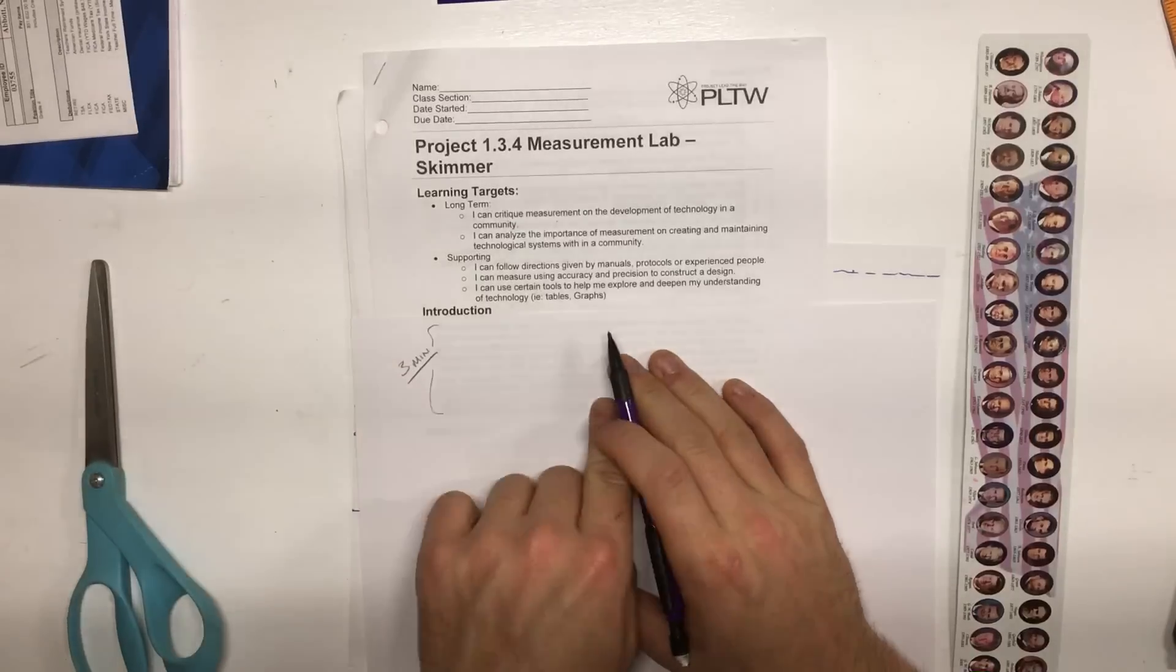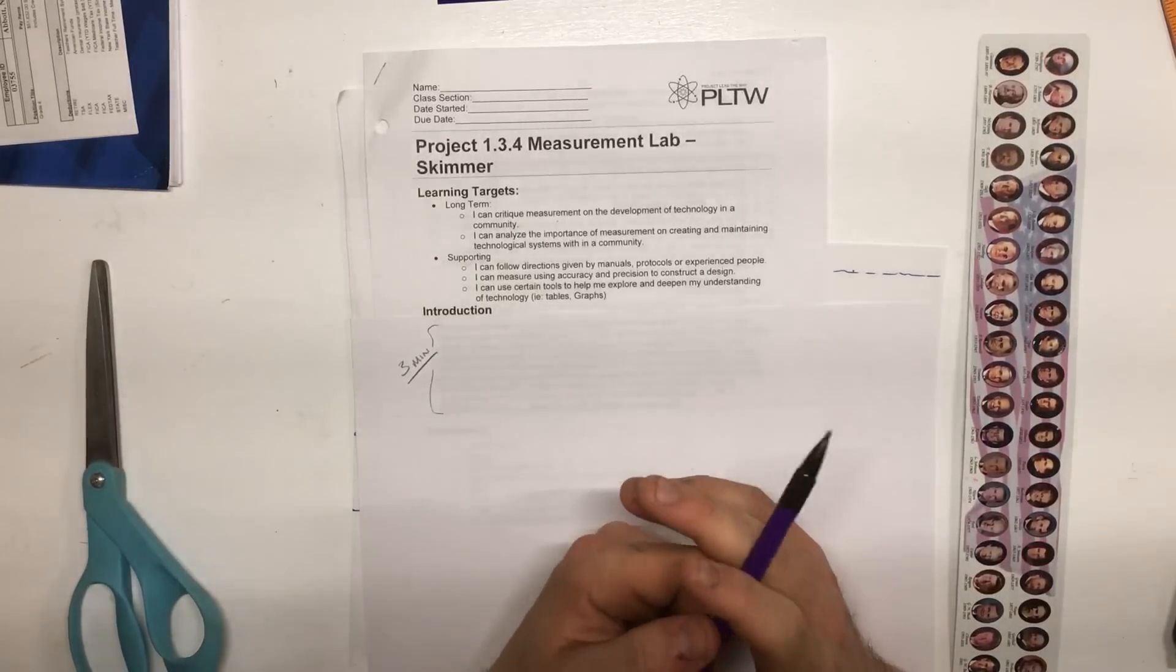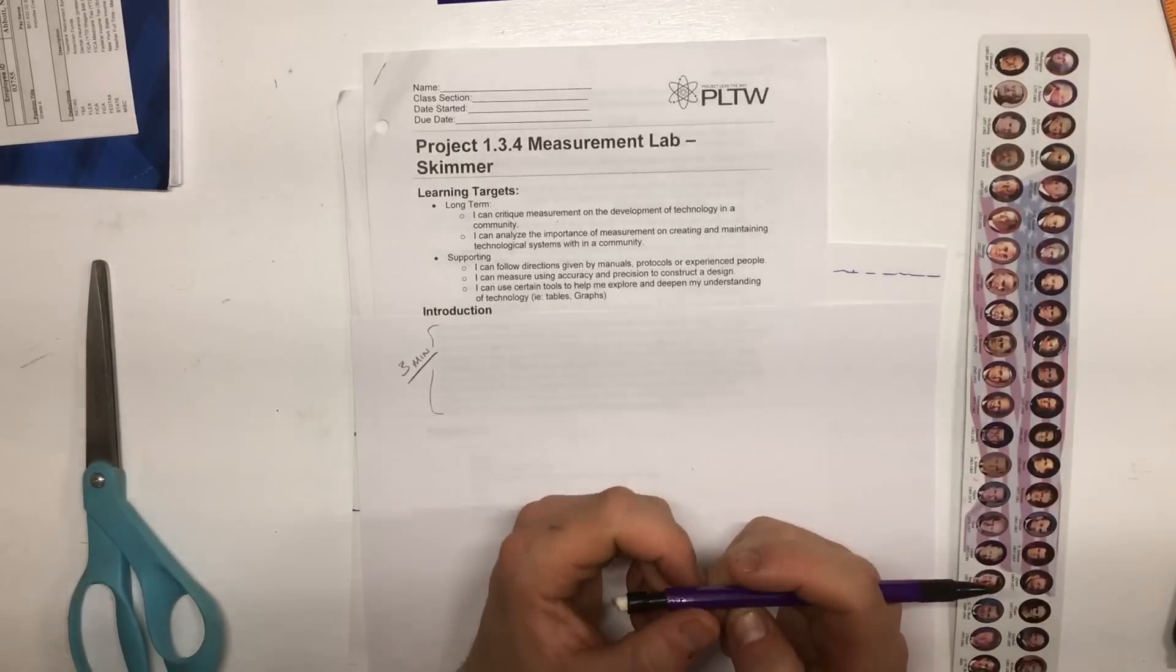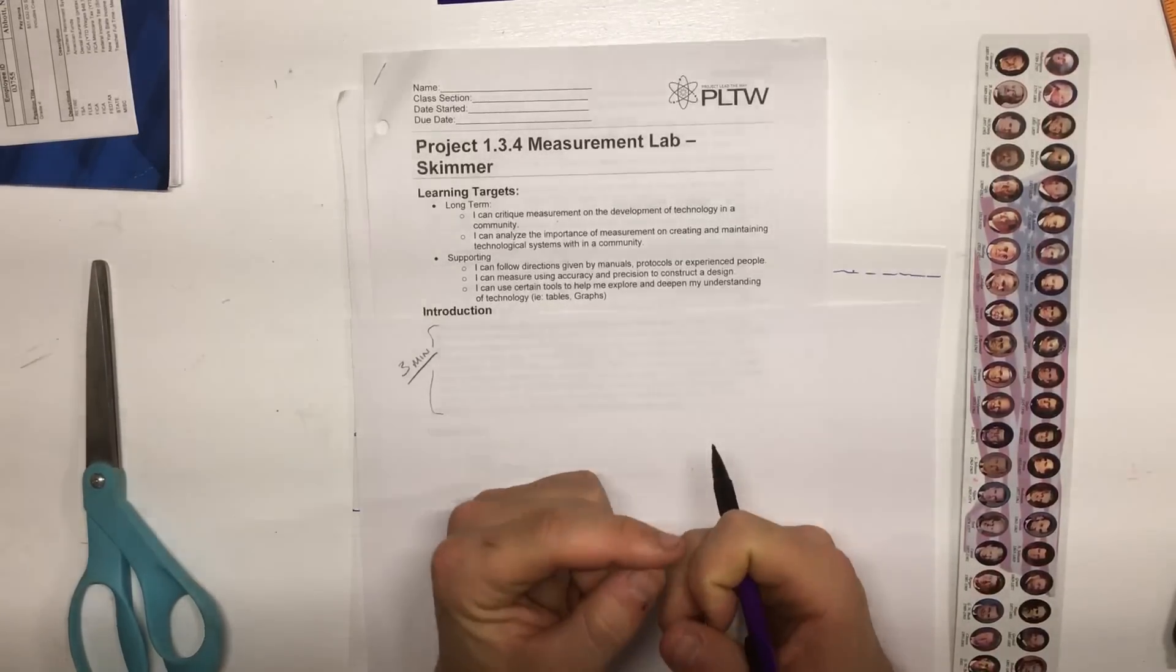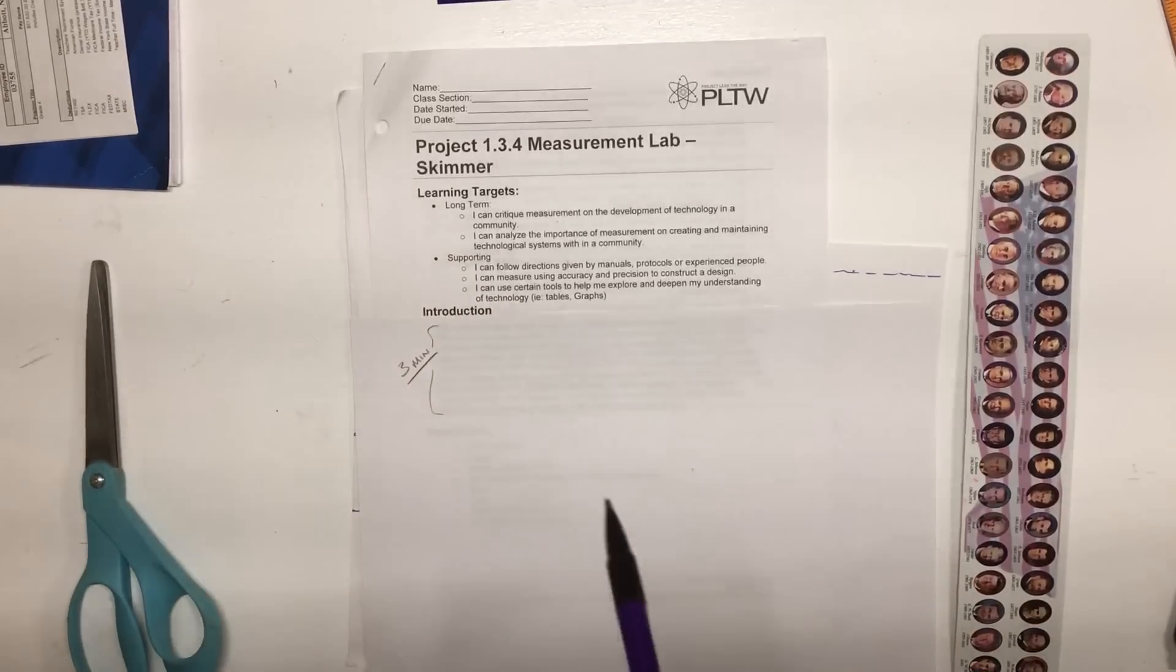Alright, you're going to take that and read through the first time for the gist. The second time I'd like you to circle any vocabulary words that you notice in that paragraph. So you should pause the video now for approximately three minutes.